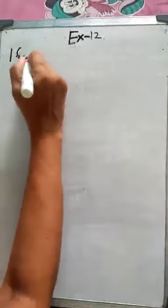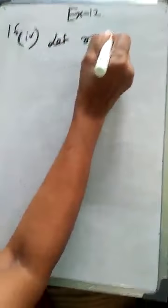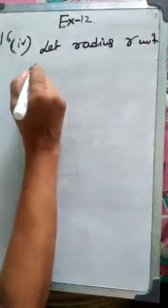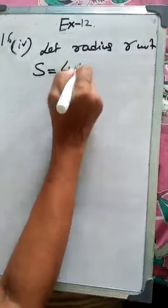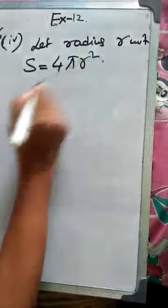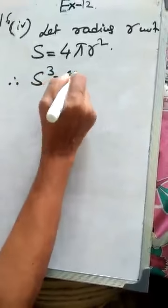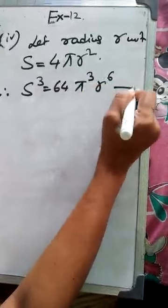Let radius is equal to R unit. S is equal to 4π R². So S³ is equal to 64π³ R to the power 6. It is the one number.